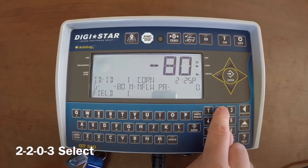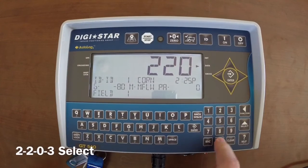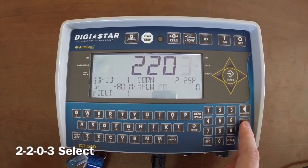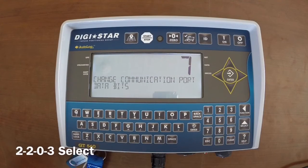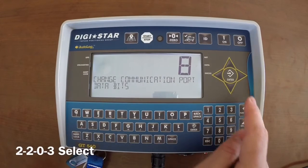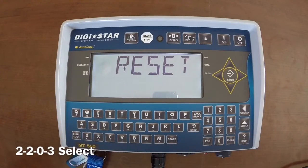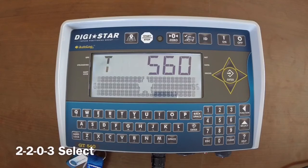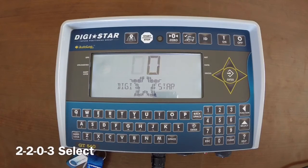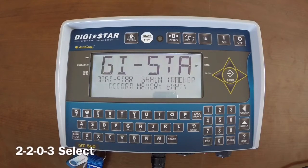Type in 2203 and then the select button. Change this setting to 8, then press enter. Again, the indicator will reset, power cycling itself off and then back on.